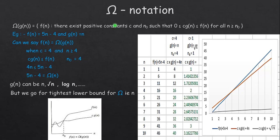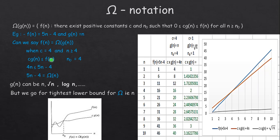Next is Omega notation. Ω(g(n)) = f(n) if there exist positive constants c and n₀ such that 0 ≤ c·g(n) ≤ f(n) for all n ≥ n₀. Here c·g(n) must be less than f(n) — the opposite of Big O where f(n) must be less than c·g(n). For example, f(n) = 5n − 4 and g(n) = n. Can we write f(n) = Ω(g(n))? For c = 4 and n₀ = 4, we can write c·g(n) ≤ f(n).